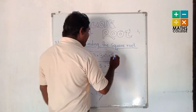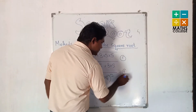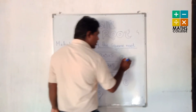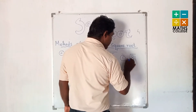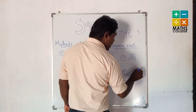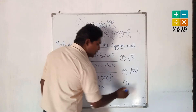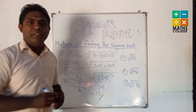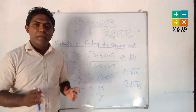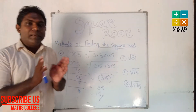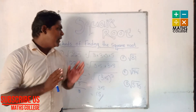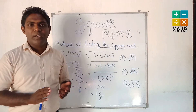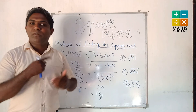My dear students, you can practice with several examples: find the square root of 81, the square root of 144, and the square root of 576. Now we have finished finding square roots by using prime factors. We can go to another method.